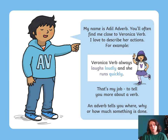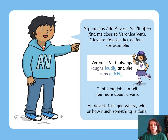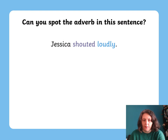The verbs in that sentence are 'laughs' and 'runs' — that's what she's doing. Then we've got the words 'loudly' and 'quickly' because 'loudly' tells us about her laugh and 'quickly' tells us about her running. It tells you more about a verb — it tells you why, when, or how much something is done.